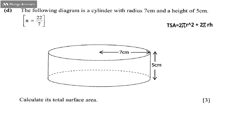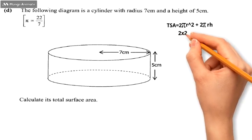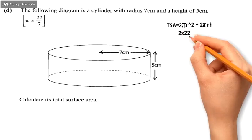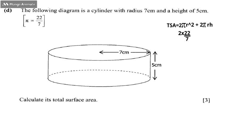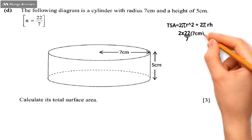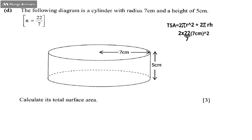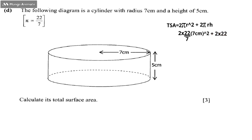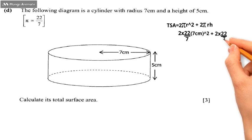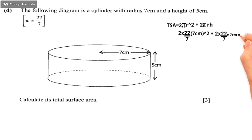Substituting the values: 2 times 22/7 times 7 centimeters squared, plus 2 times 22/7 times 7 centimeters times 5 centimeters. The radius is 7 centimeters and the height is 5 centimeters.